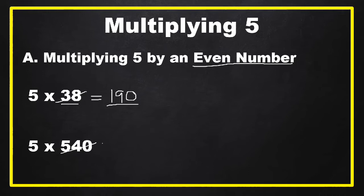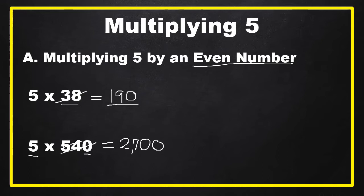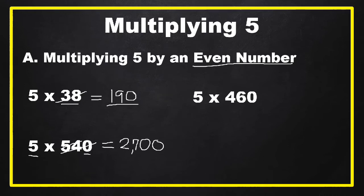Another example: five times 540. Get one half of 540 — if 540 seems like a big number, you can get one half of 54, which is 27. Don't forget to copy the zero at the right side of 27, giving 270, which is one half of 540. Then add a zero at the right side because we multiplied by five. The final answer is 2,700.